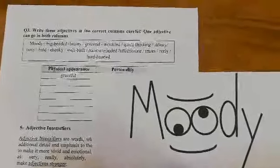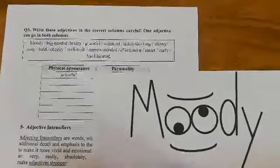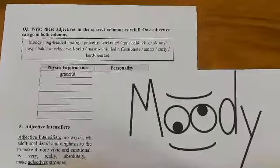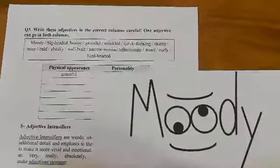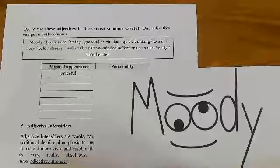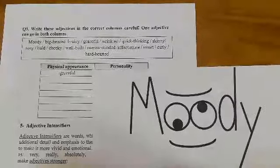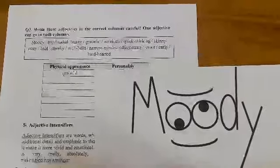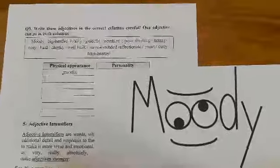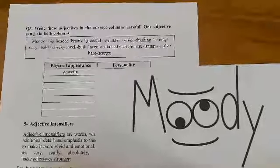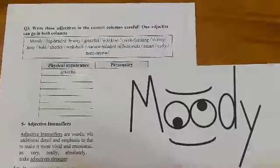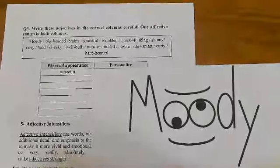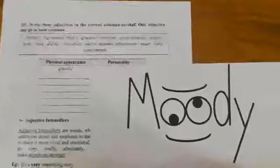Greetings, dear students. Today we are going to take two types of adjectives. اليوم رح ناخد نوعين من أنواع الاdjectives والصفات اللي توصف الناس على مستويين مختلفة. واحد الفيزيكال أبيرانس اللي هو المظهر العام، والثاني هو الpersonality، الشخصية.